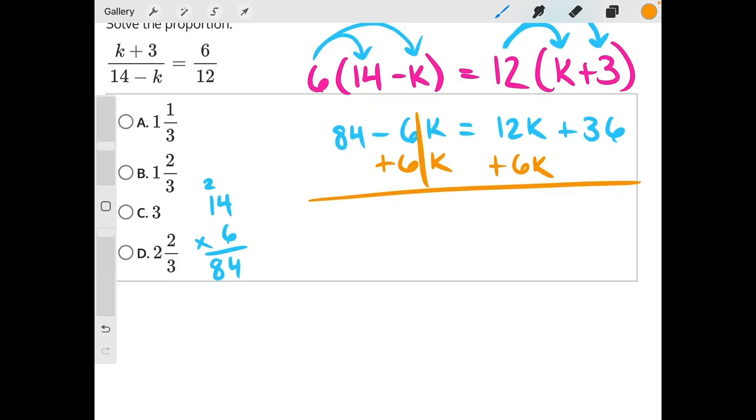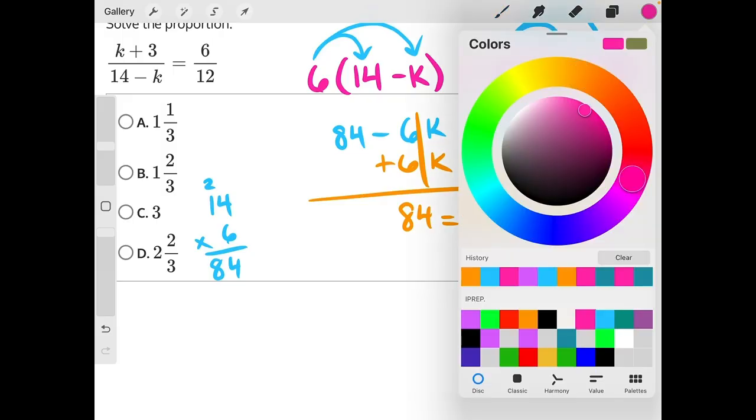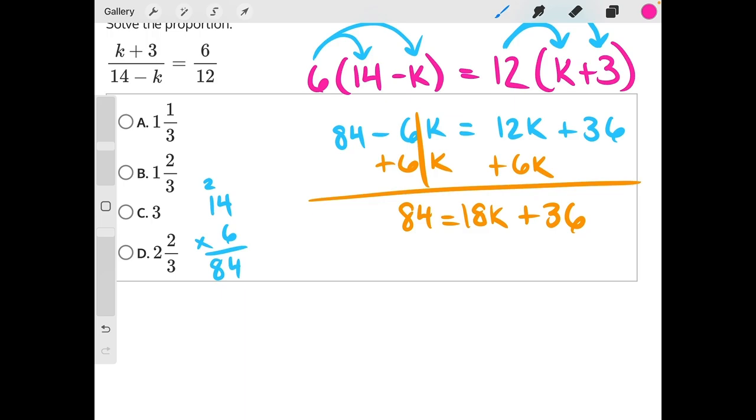These 6ks will cancel, leaving us with 84 = 18k + 36. Then 36 is being added to 18k, so the opposite is subtracting it from both sides.